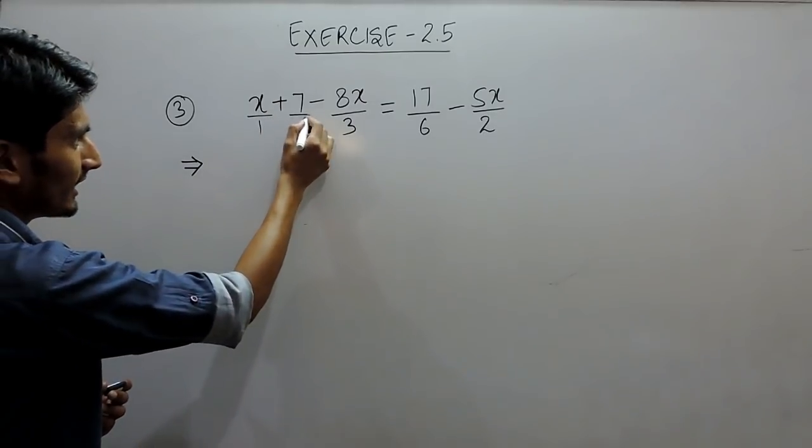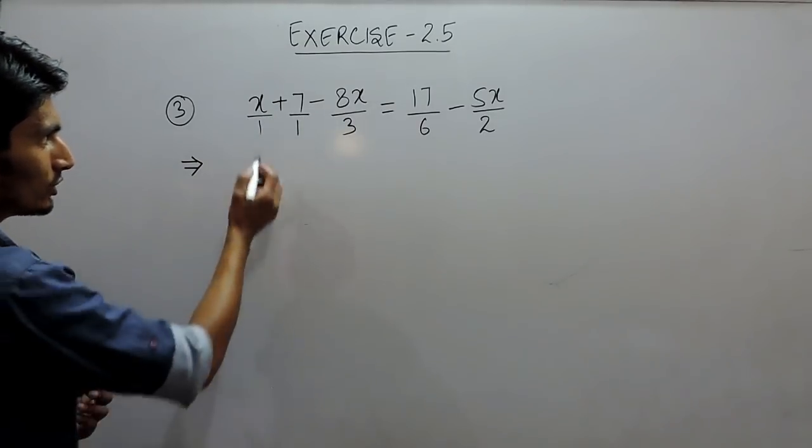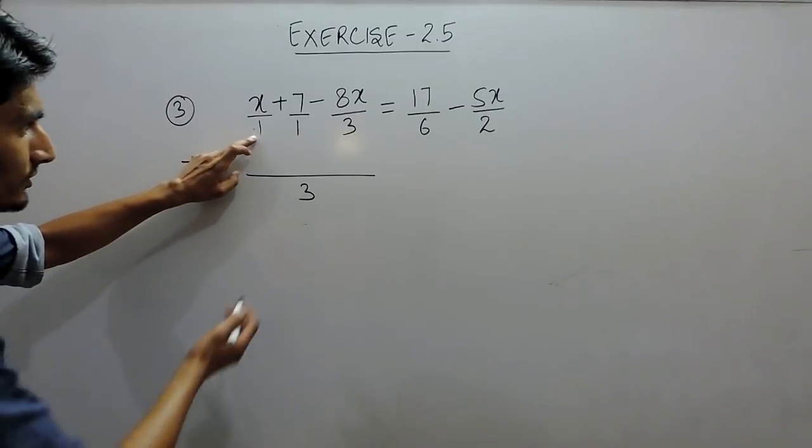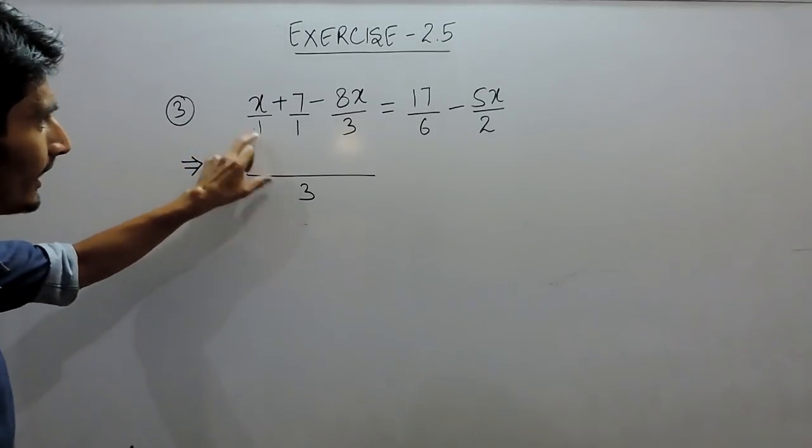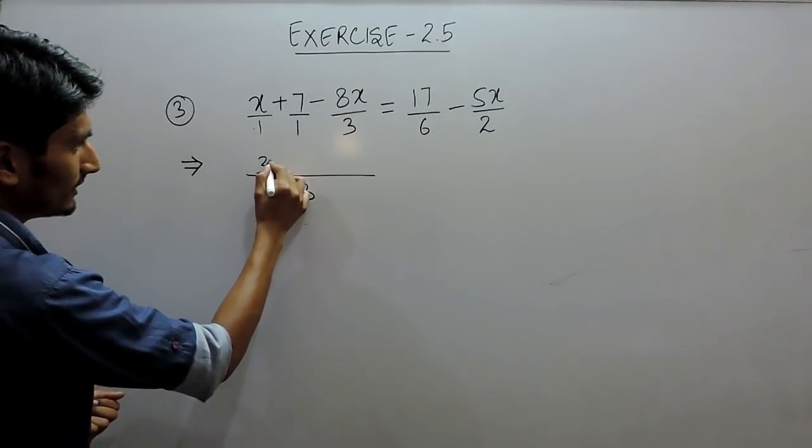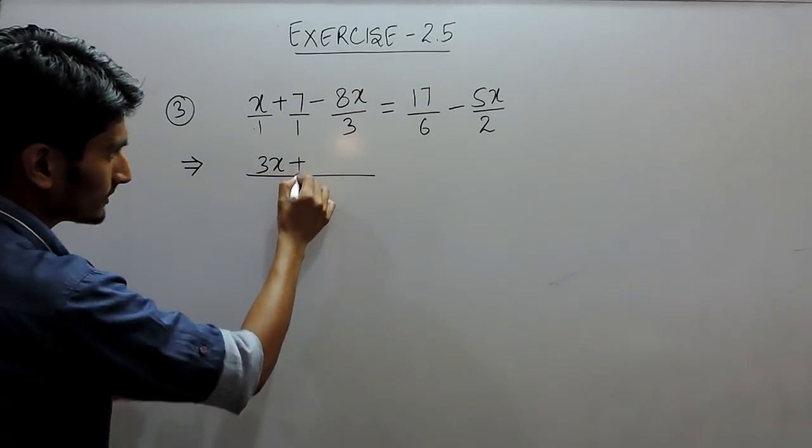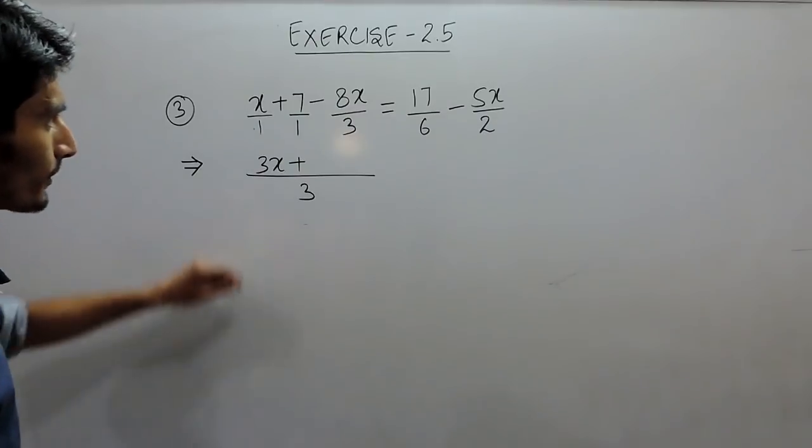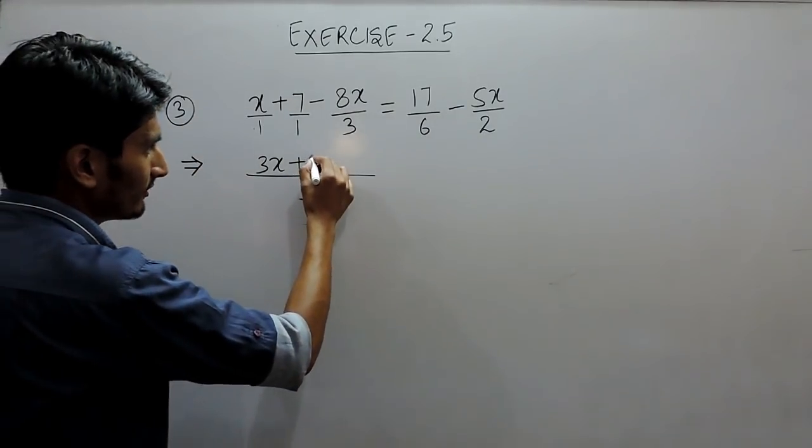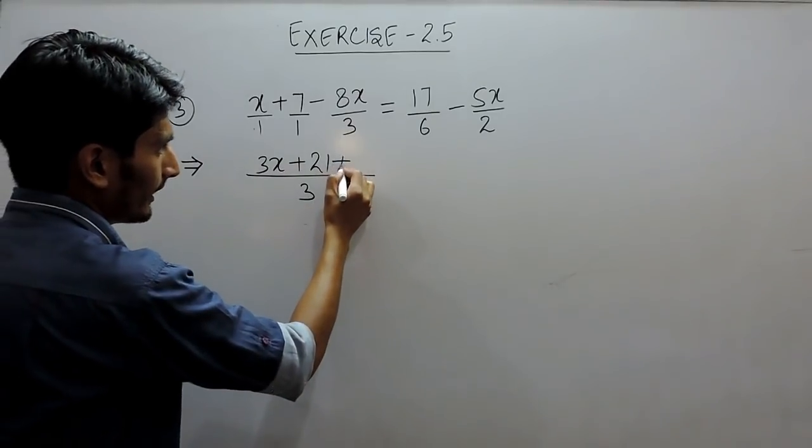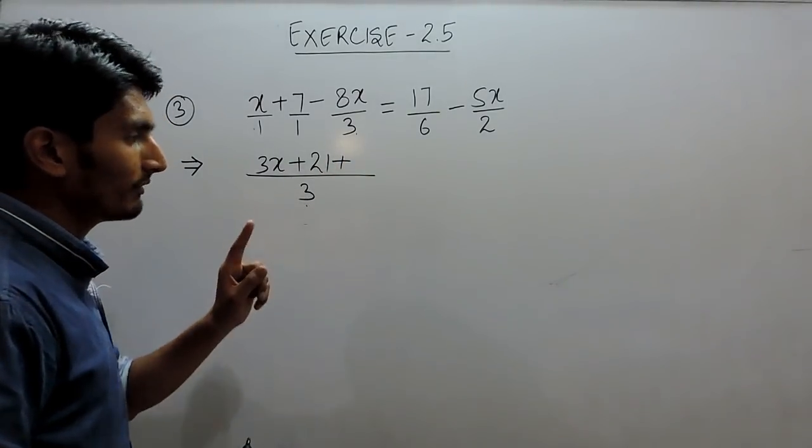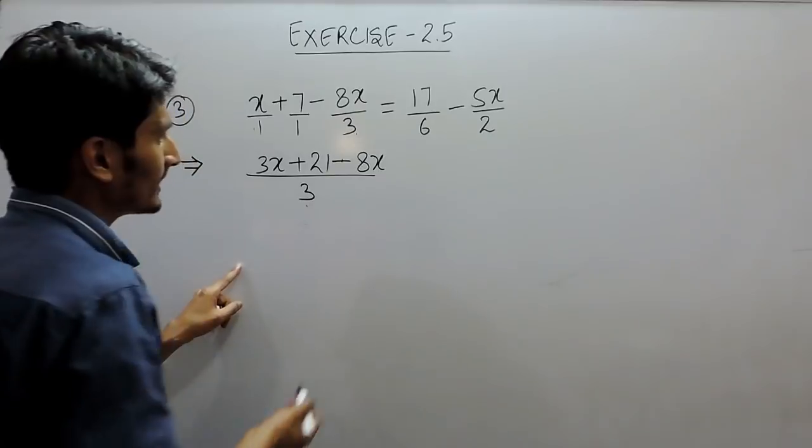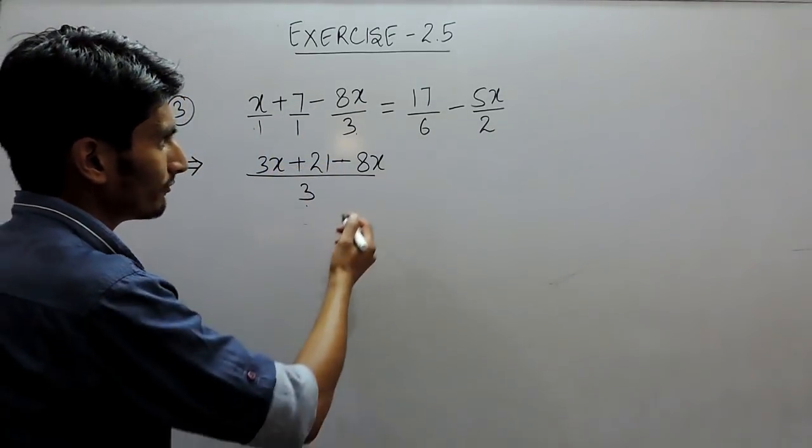In this case this can be considered as 1 and this is 1. So taking the LCM of 1, 1, and 3, the LCM is 3. When 3 is divided by 1, the quotient will be 3, and when 3 is multiplied by x, it will give 3x. Plus, because here it is a positive sign. Again, when 3 is divided by 1, the quotient will be 3, and when 3 is multiplied by 7, the answer will be 21. And when 3 is divided by 3, the quotient will be 1, and when 1 is multiplied by 8x, it will give 8x. Minus 8x, because the sign is of minus.